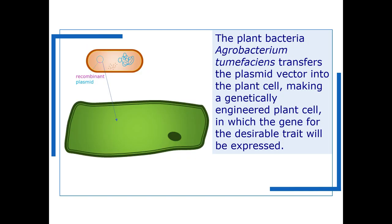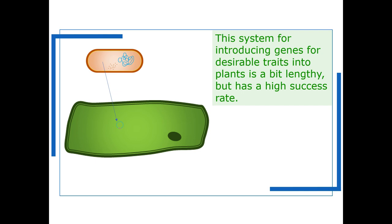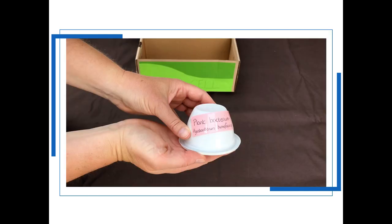So the plant bacterium, Agrobacterium tumefaciens, actually transfers the plasmid vector into the plant cell to make genetically engineered plant cells with fairly high success rate. So although some students might miss, hopefully most of them will manage to transfer their recombinant plasmids into the plant cells.